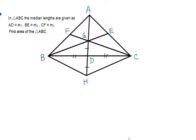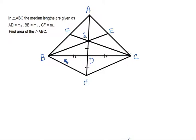In triangle ABC, the medians are the lines joining each vertex to the midpoint of the opposite side. A is a vertex and D is the midpoint of BC; B is a vertex and E is the midpoint of AC; F is the midpoint of AB, joined with C. The three medians meet at G, which is called the centroid of the triangle.